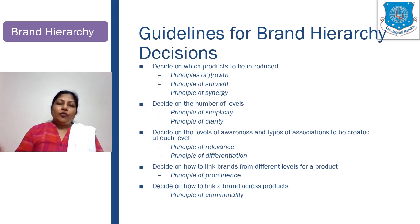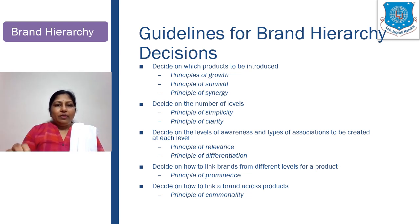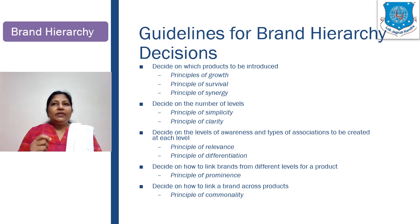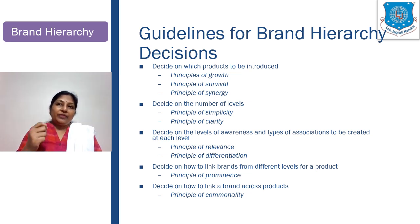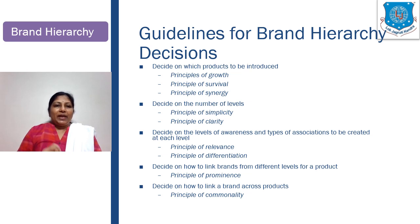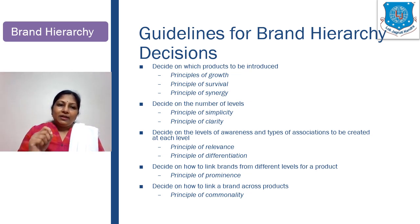Some guidelines for brand hierarchical decisions: First, deciding on which products to introduce — here the principle of growth, survival, and synergy is considered. Second, deciding on the number of levels, guided by the principle of simplicity or clarity. Third, deciding on the levels of awareness and types of associations to be created at each level, guided by the principle of relevance and differentiation. Fourth, deciding on how to link brands from different levels of a product, helped by the principle of prominence. And fifth, deciding on how to link a brand across various products, guided by the principle of commonality.